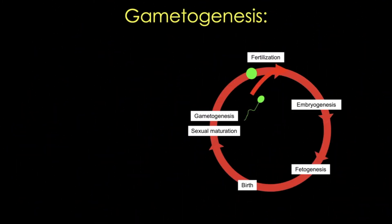Take a look at the big events in the human life cycle, which I've roughly outlined in this cartoon. Development of the embryo begins at fertilization, the process by which the male gamete, sperm, and the female gamete, the oocyte, unite to give rise to the zygote.